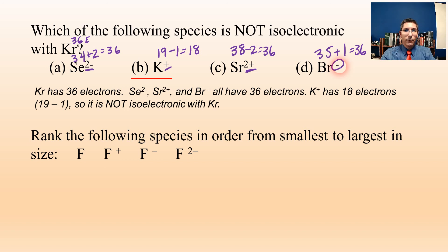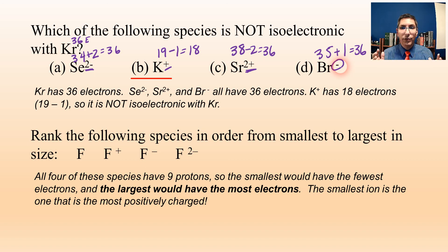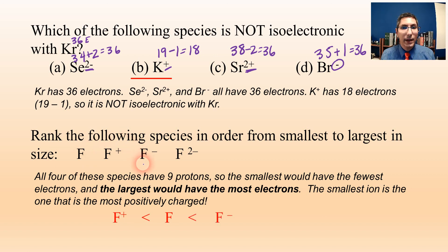Now let's rank these four species in order from smallest to largest: F⁺, F, F⁻, and F²⁻. Since they all have the same number of protons — nine — it comes down to electrons and electron-electron repulsion. The fewest electrons means the smallest size. The most positively charged, F⁺, has the fewest electrons, so it's the smallest. Next is neutral F, then F⁻, and the largest is F²⁻, the most negatively charged with the most electrons.